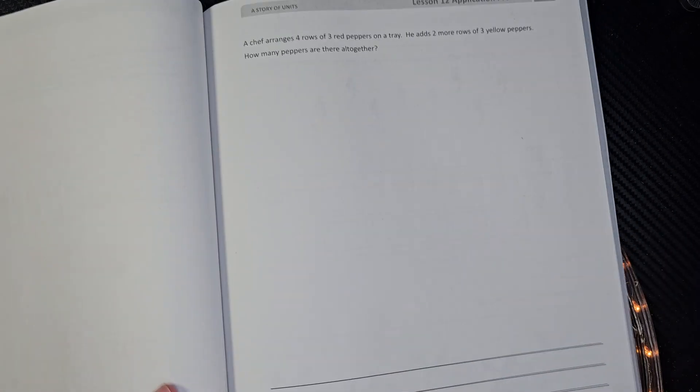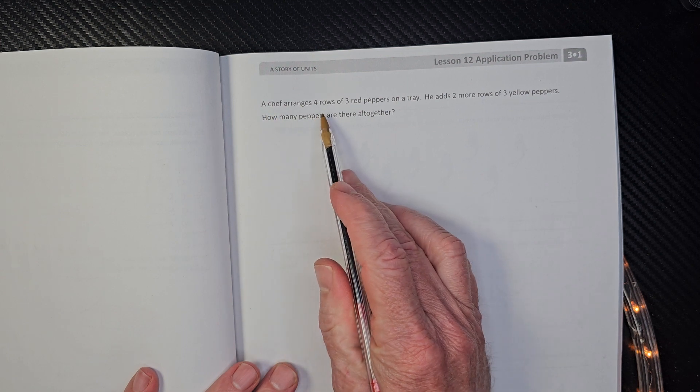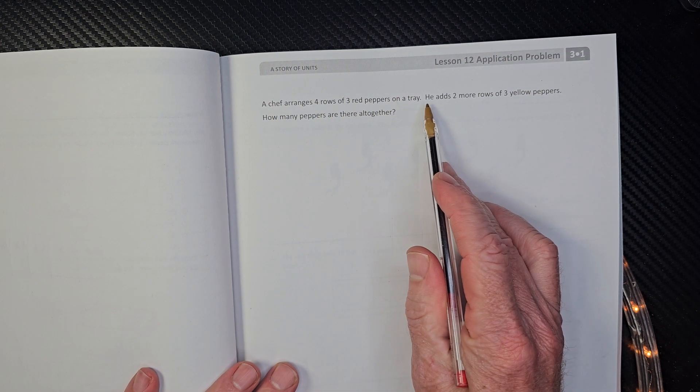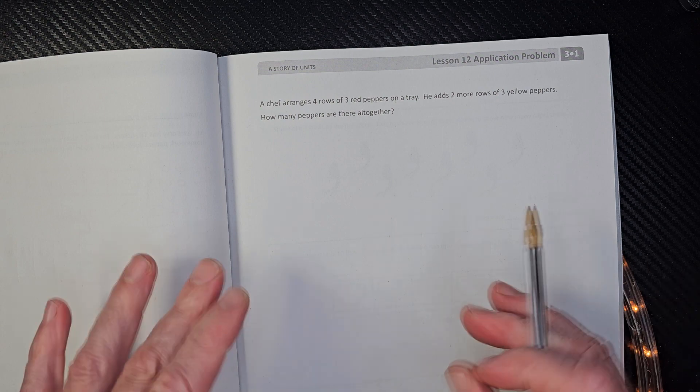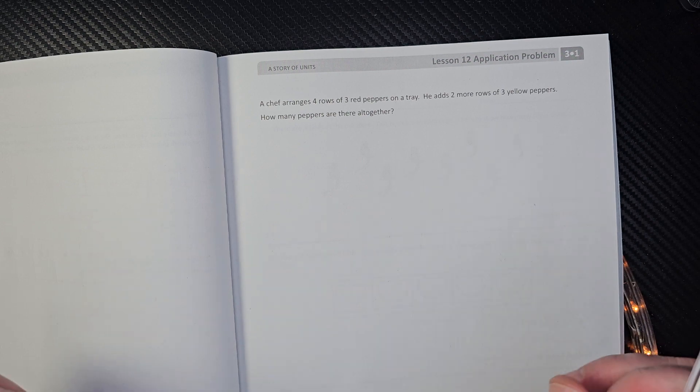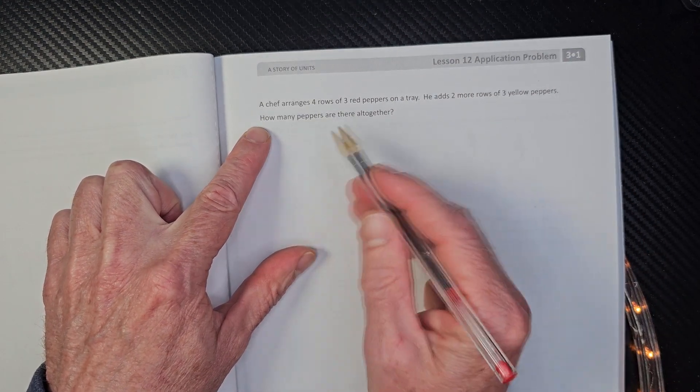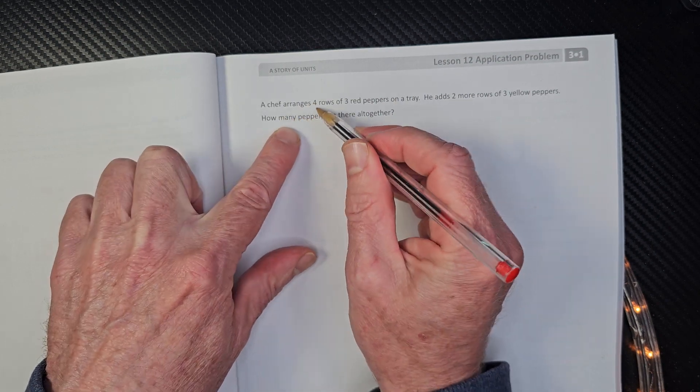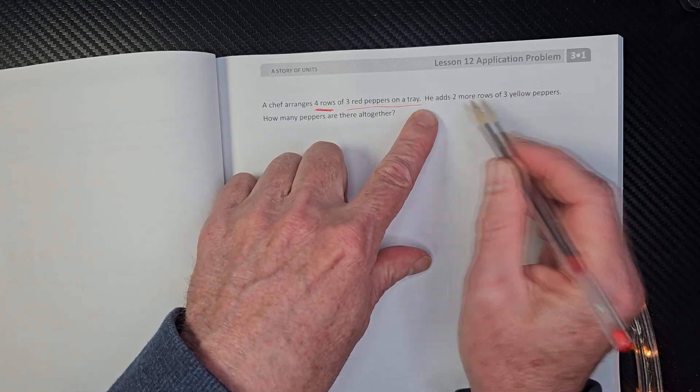So on this, you're supposed to read, draw, and write. So first of all, we're going to read the sentence. A chef arranges four rows of three red peppers on a tray. He adds two more rows of three yellow peppers. How many peppers are there all together? All right, so it does not say we need to make a labeled tape diagram. We don't need to make an array. We can just have fun doing whatever we need to do to find the answer. Let's go ahead and take each sentence at a time. Let's worry about that one a little bit later.